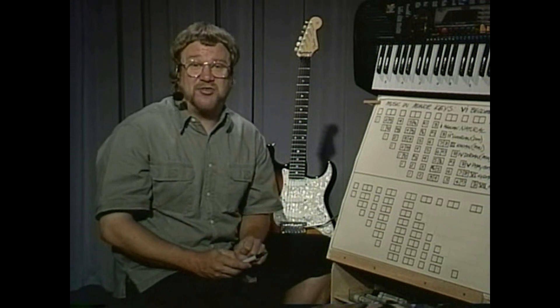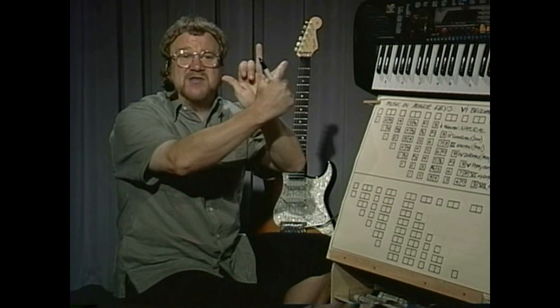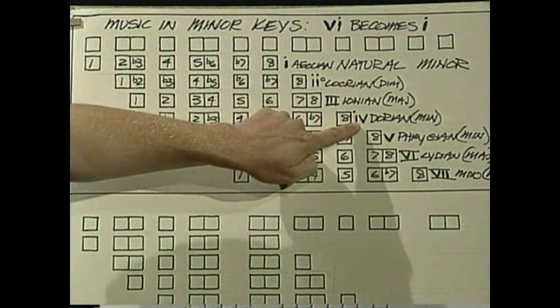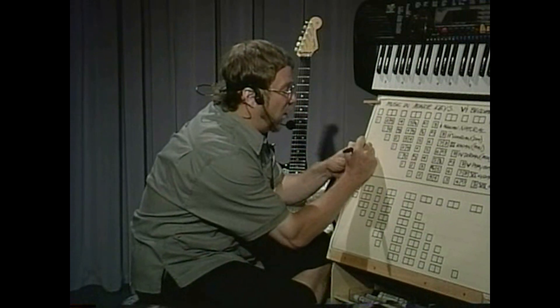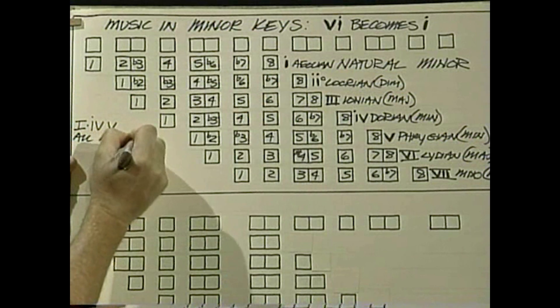A very interesting thing happens in minor key music. In minor key music, one, four, five is in a sense replaced by the old six, two, three — the minor tonal centers within the key. So as soon as six becomes one, four and five also become minor because they are the old two and the old three. One is Aeolian, four is Dorian, and five is Phrygian. An interesting thing about minor key harmonization: you get a one, four, five progression that's all minor chords instead of all major chords the way they were in major key music.